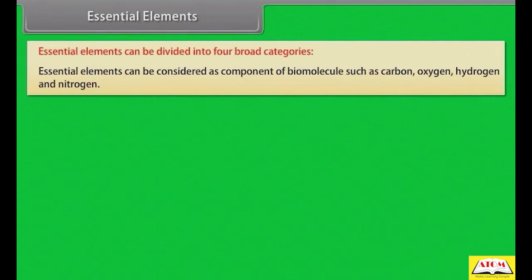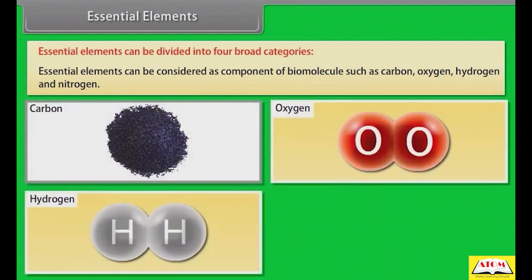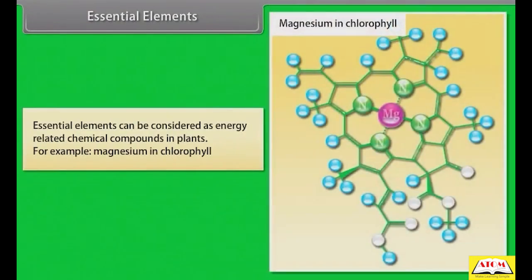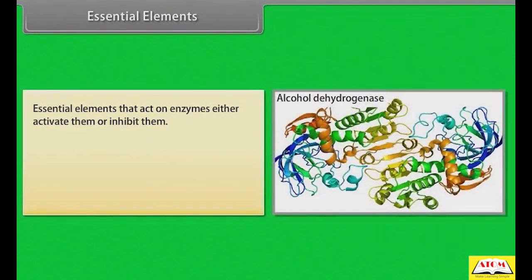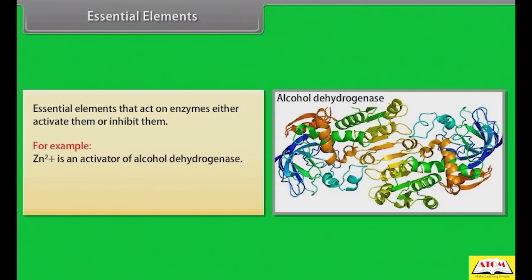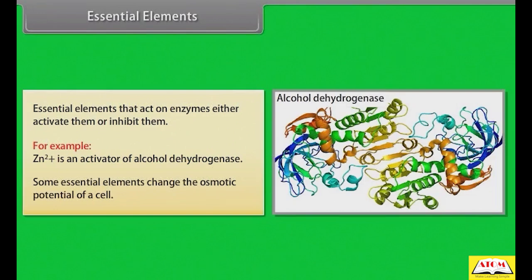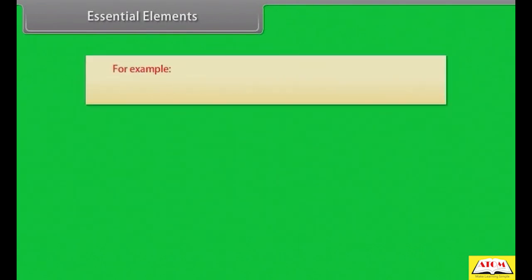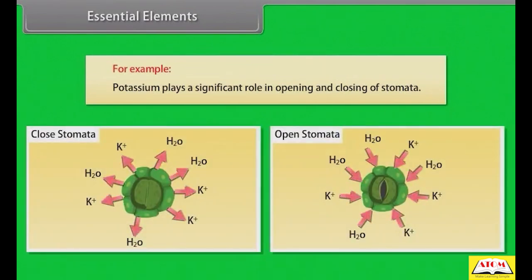Essential elements can be divided into four broad categories. They can be considered as components of biomolecules such as carbon, oxygen, hydrogen and nitrogen. They can be considered as energy-related chemical compounds in plants, for example magnesium in chlorophyll. Essential elements may act on enzymes, either activating or inhibiting them, for example Zn2+ is an activator of alcohol dehydrogenase. Some essential elements change the osmotic potential of a cell; for example, potassium plays a significant role in opening and closing of stomata.